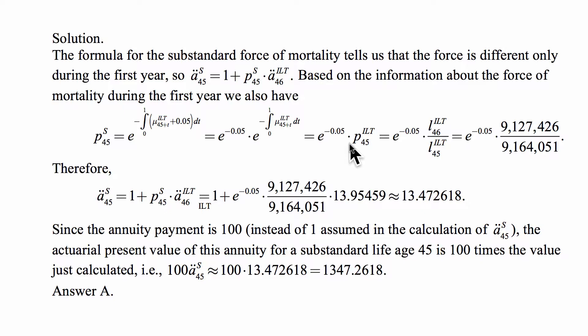That means that for the substandard life at age 46, we can write that life annuity. We want to calculate a life annuity of 100 per year, but let's write the unit annuity for now. A double dot annuity due at age 45 on substandard life - that's one paid at exact age 45 plus, given survival for one year, this will become a regular life annuity due based on the illustrative life table. But this survival in the first year is subject to substandard mortality, described by that substandard force of mortality formula between ages 45 and 46.